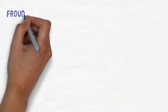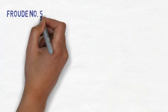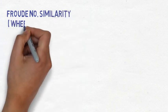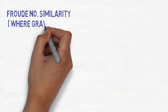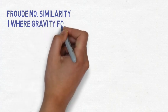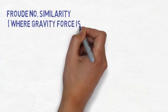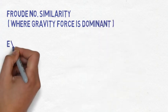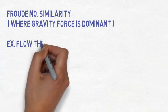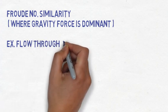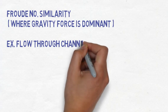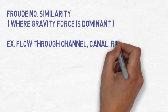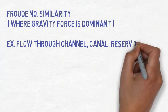Now in this, we will discuss Froude number similarity, that means the situation where the gravity force will be the dominant force. In the case where gravity force will be dominant, we can apply the following tricks - that is Froude number similarity. Gravity force will be dominant in the case of flow through channel, canal, reservoir, or river.